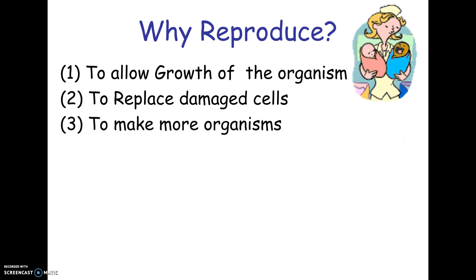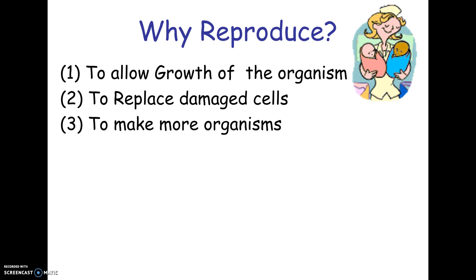And finally, to make more organisms. In multicellular organisms like us, we have specific cells that are designated just for reproduction — we make sperm and eggs. We don't have skin cells turning into human beings; only specific cells are used. But in a single-celled organism, when that one cell divides, it has basically made a brand new organism. So making more organisms is the final reason why cells divide.